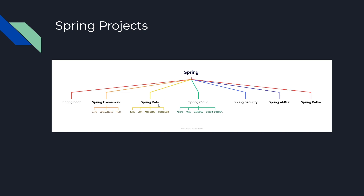Spring Data is another project that has everything related to data access. If there is a data store and we want to read or write data to it, we will use Spring Data. It has support for various data stores like JDBC, JPA, MongoDB, Cassandra, and Couchbase. Anything that has to do with data, it's most likely that we will find something in Spring Data.